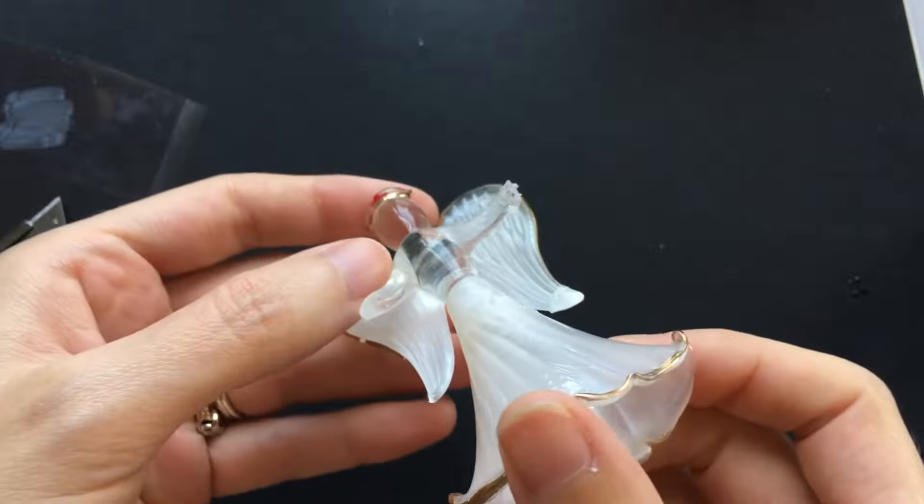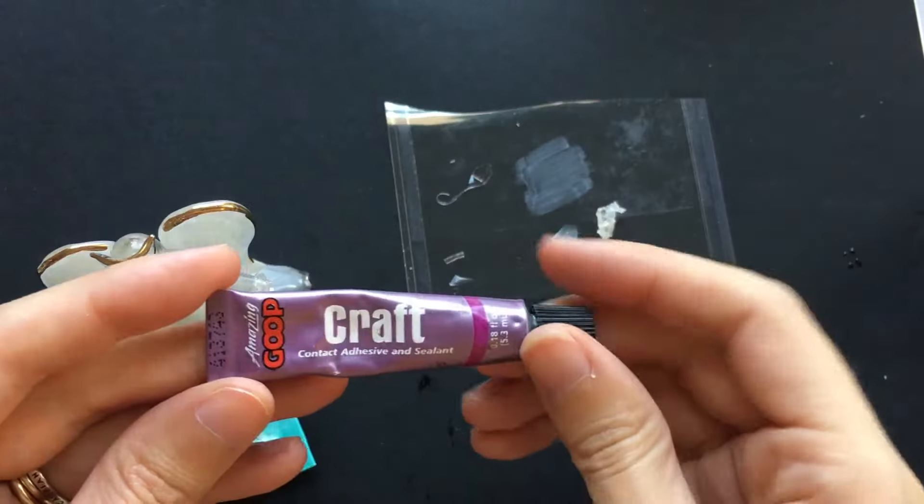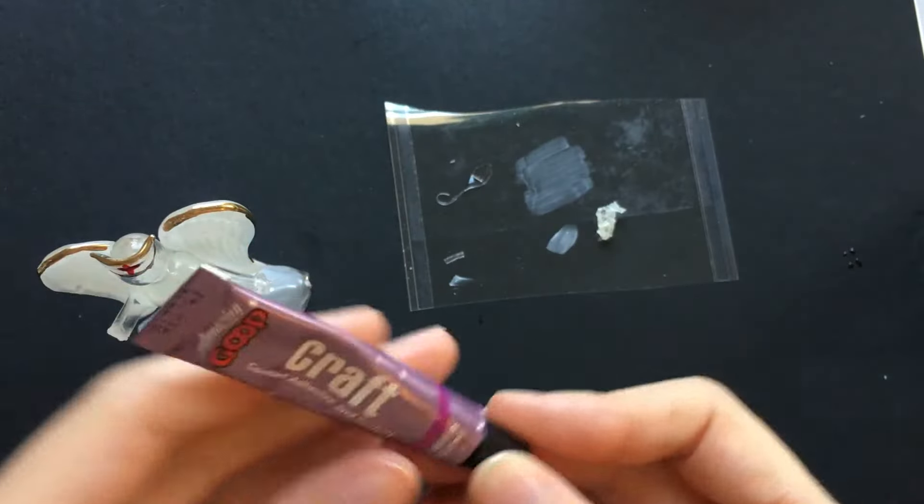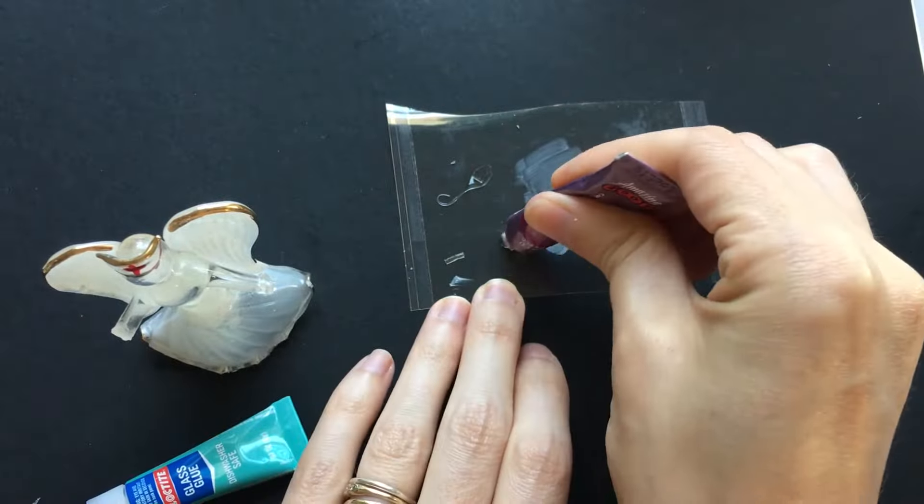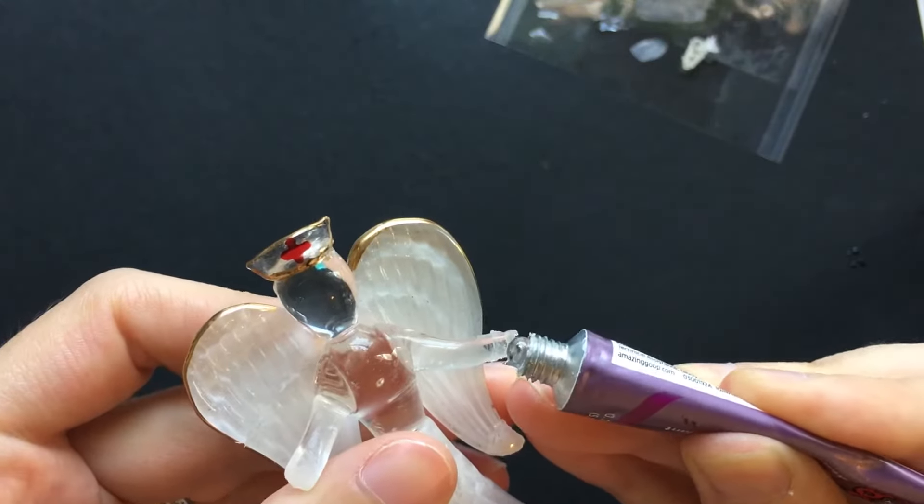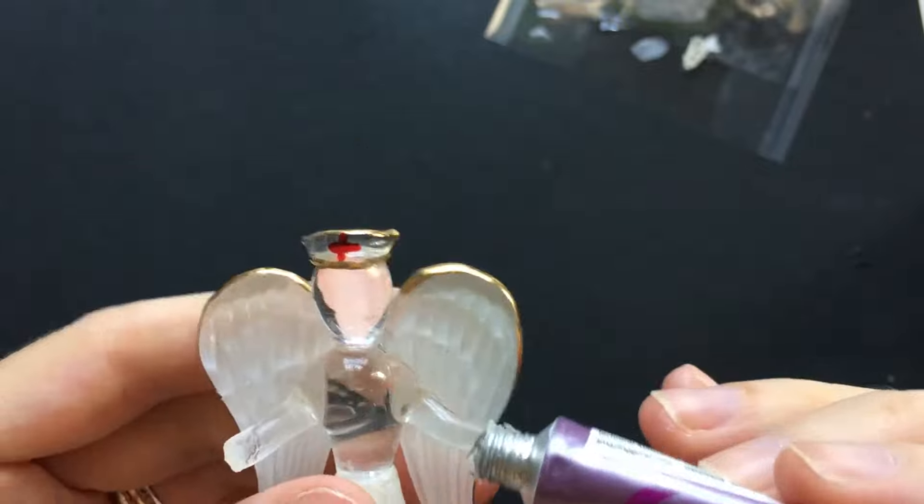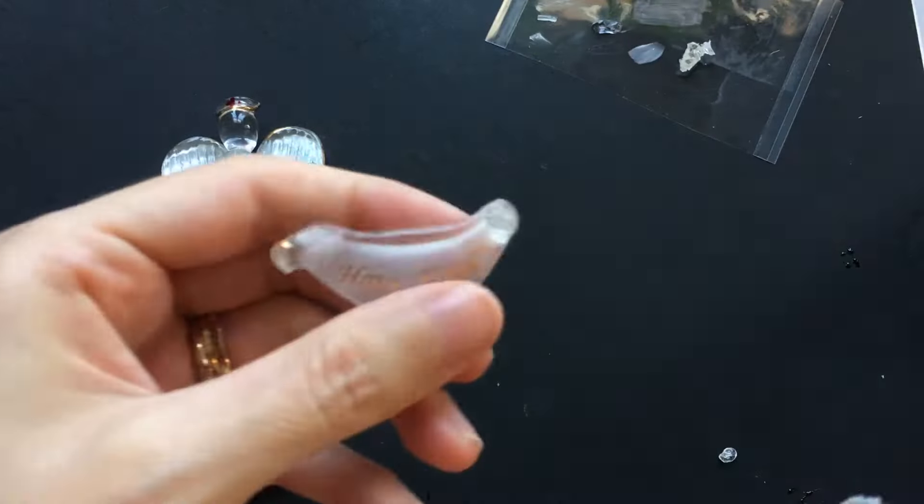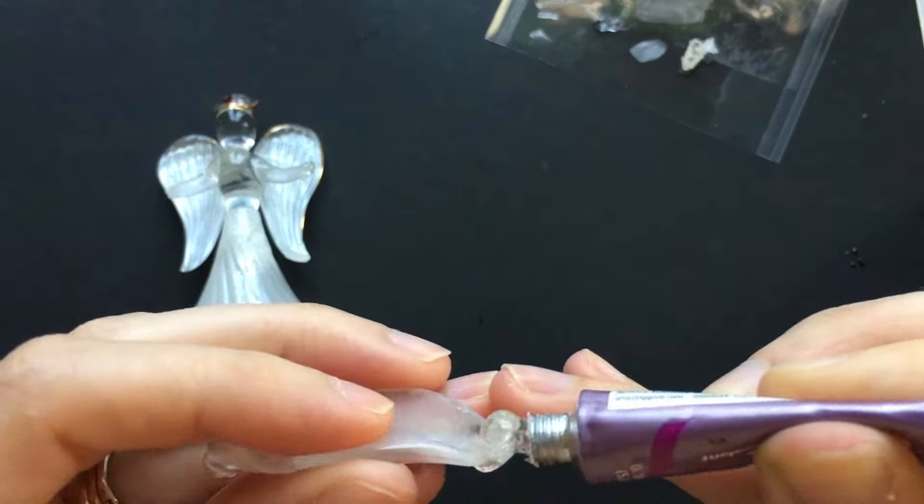Once that's finished I can go ahead and get some Amazing Goop craft glue. This is what I'm going to be using to attach the sign to the right part where it was broken off when there was no replacement piece. It's very dimensional glue so it can fill in all those gaps.